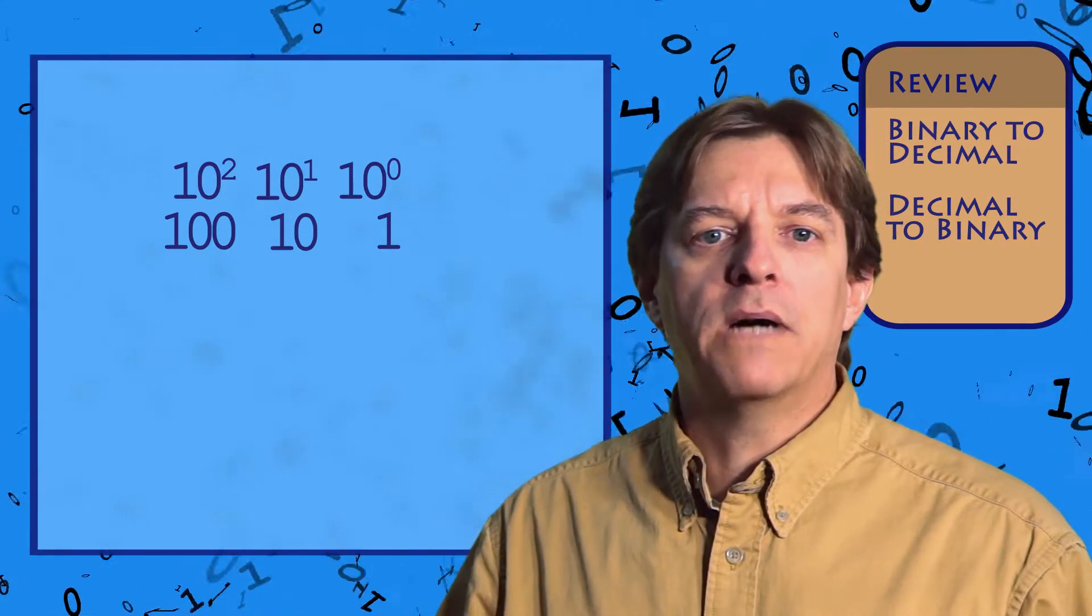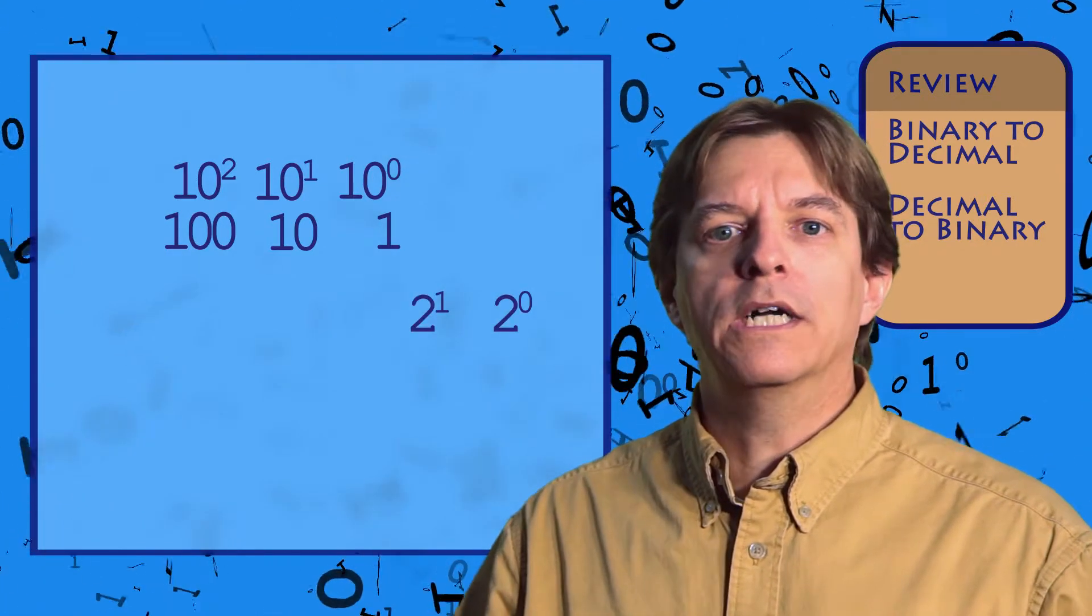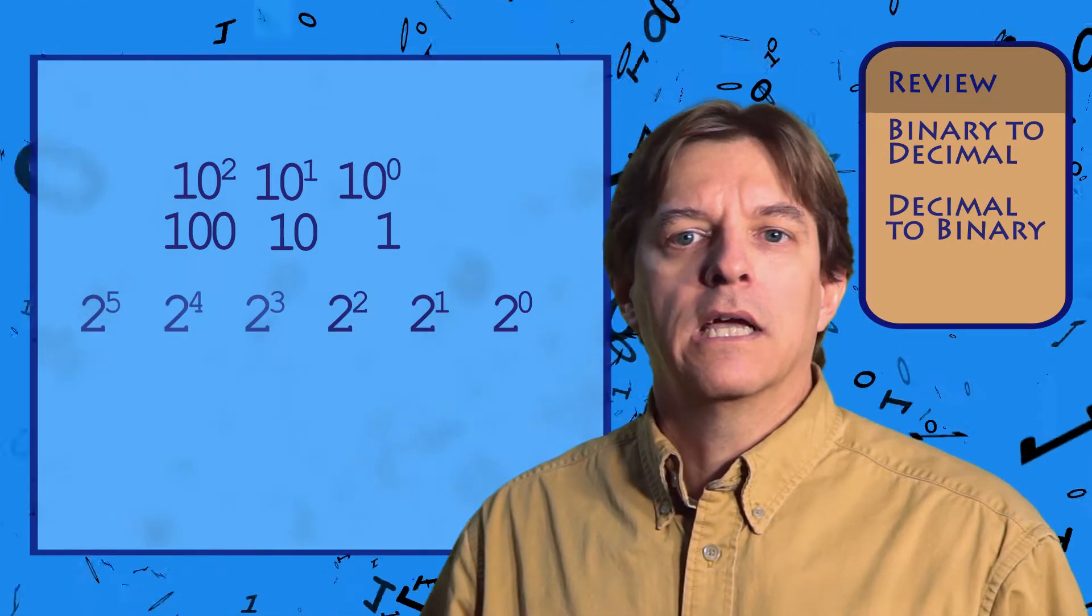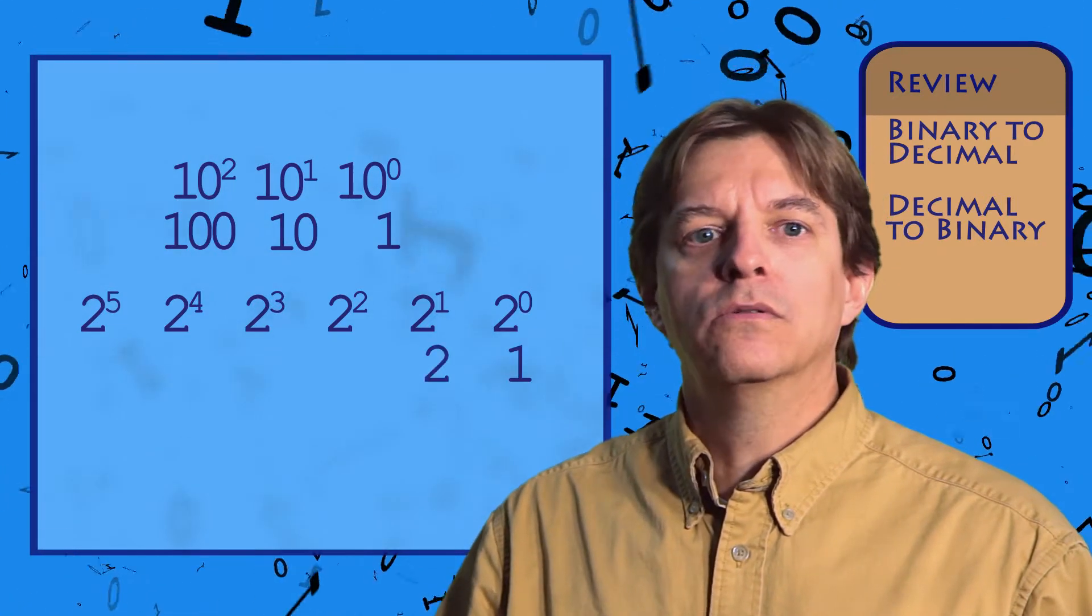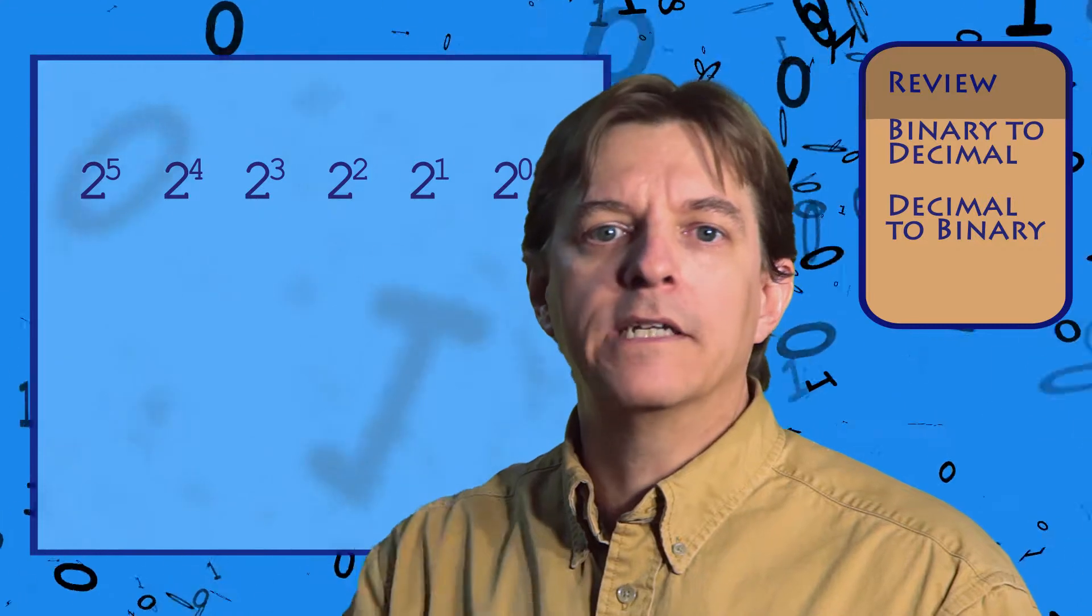Applying this principle to binary, the columns are 2 to the 0, 2 to the 1, 2 to the 2, and so forth, giving us 1, 2, 4, 8, and on up. So let's convert from binary to decimal.